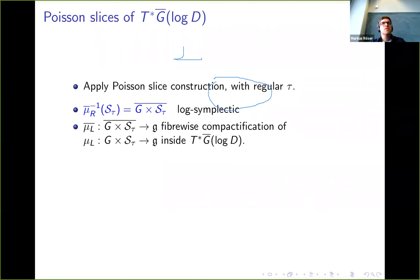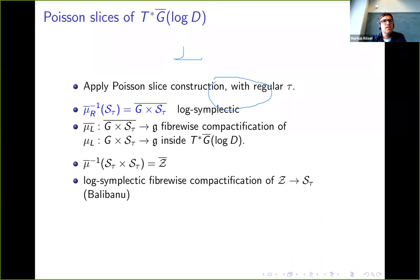If we apply this Poisson slice construction here, then it turns out that if we just look at the right G action, we get a log-symplectic partial compactification of G×S. It turns out it's actually a fiber-wise compactification for the moment map with respect to the left action. Balibanu has studied a similar situation where we look at the G×G action. In that case, you get her partial compactification of the universal centralizer.